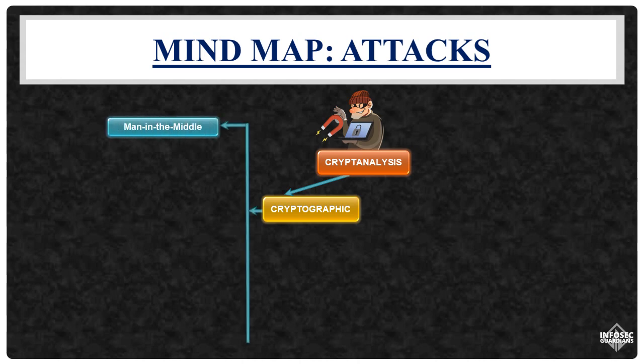Man-in-the-middle attacks involve the attacker inserting themselves into a conversation, allowing them to eavesdrop on and potentially modify or decipher the communication. Replay attacks are a subset of man-in-the-middle attacks. The attacker intercepts data, such as a user's hashed password sent for authentication. While they may not decipher the data, they can replay it later for unauthorized access.